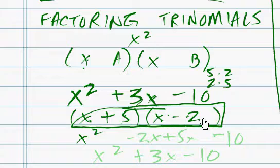So x² - 2x + 5x. Well, we know that's not it because, well, actually, we do know that's it because there it is. Our goal is 3x.